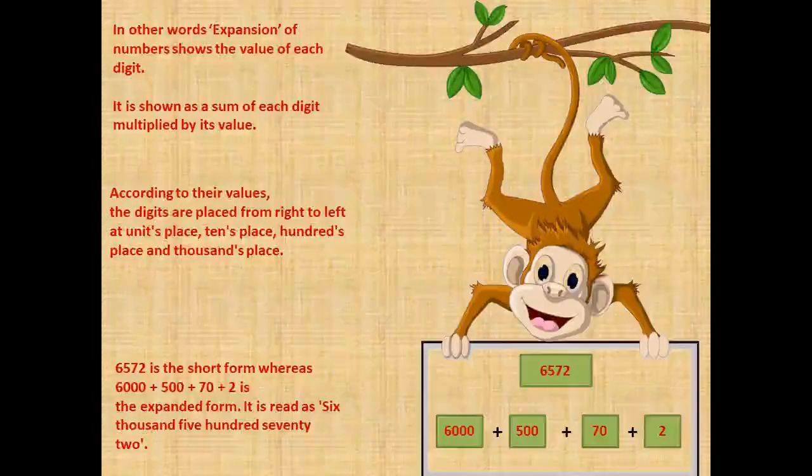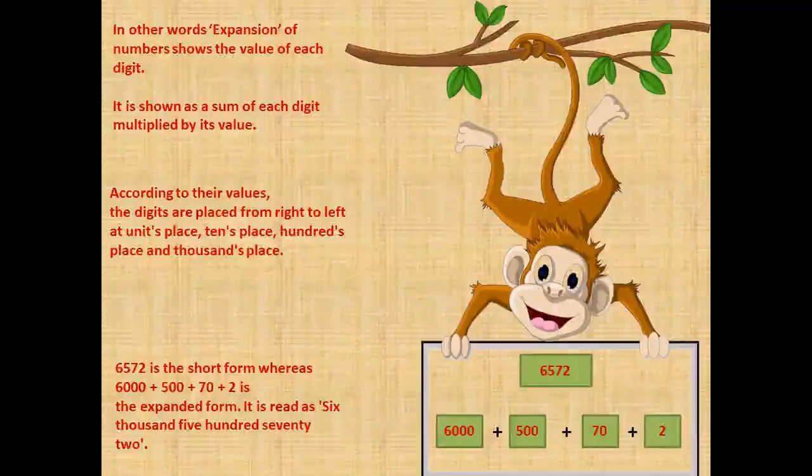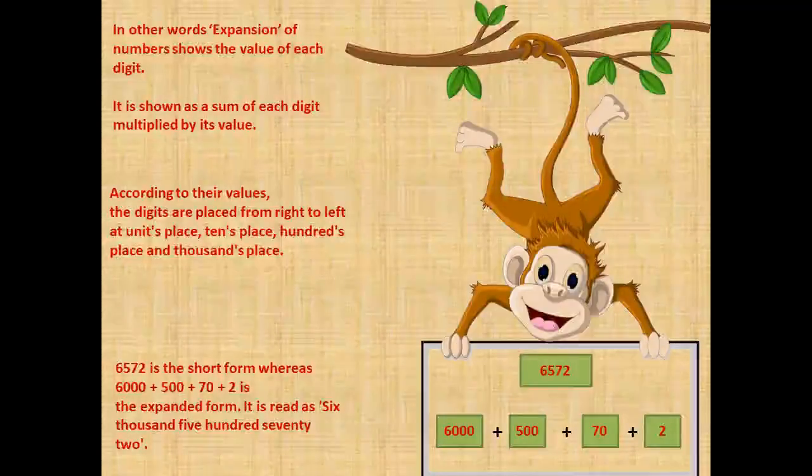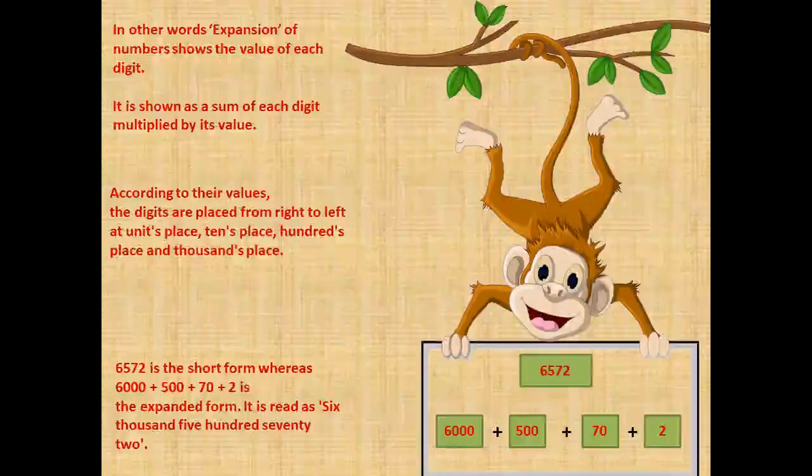we write 6 which is in the thousands place. So we write 6000. We put an addition sign. We write the next number 5.